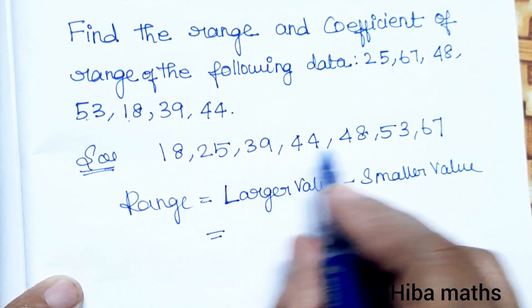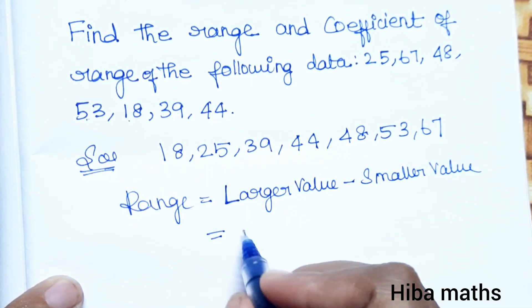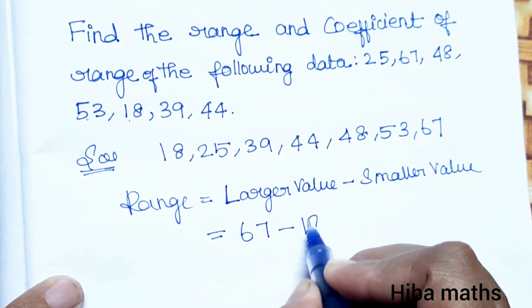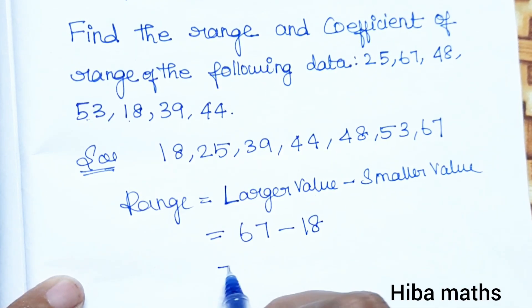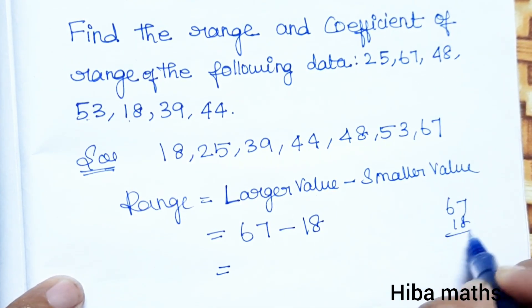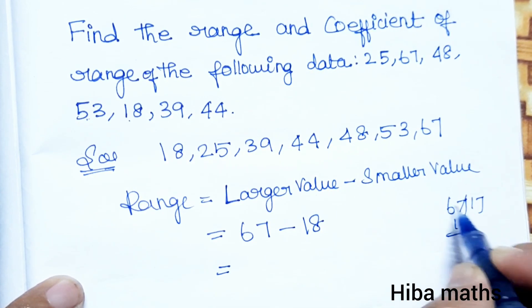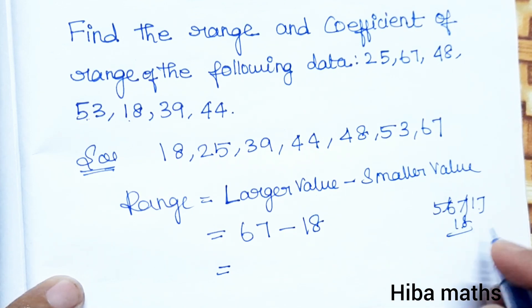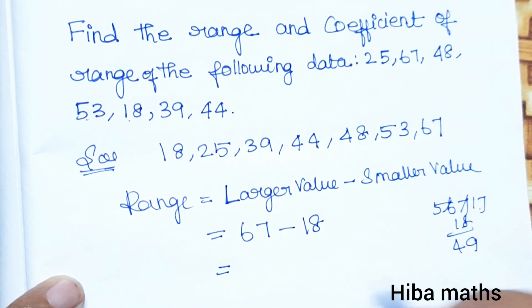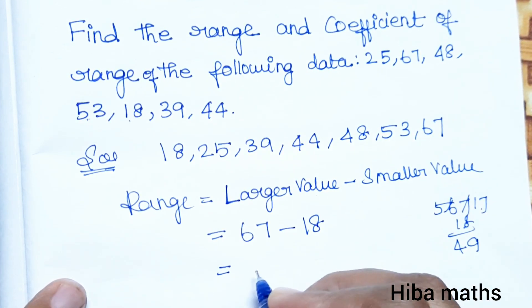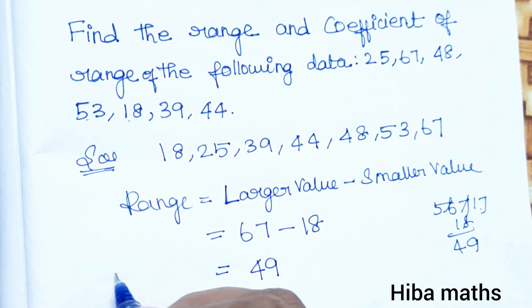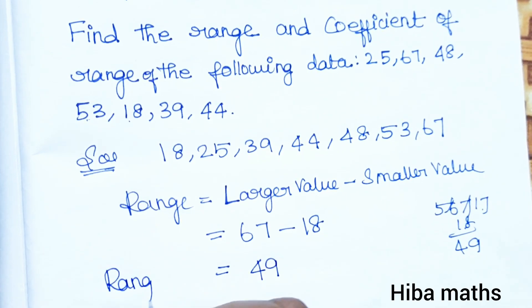The larger value is 67, and the smaller value is 18. So the range is 67 minus 18, which gives us 49. The range, capital R, equals 49.